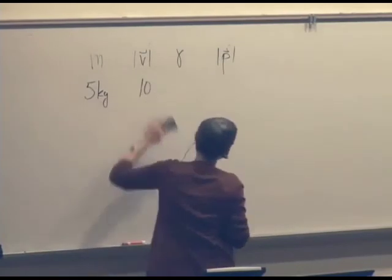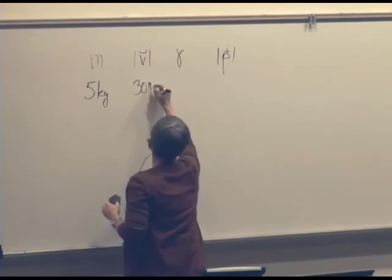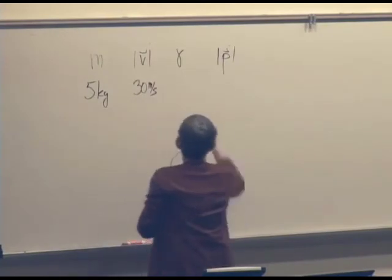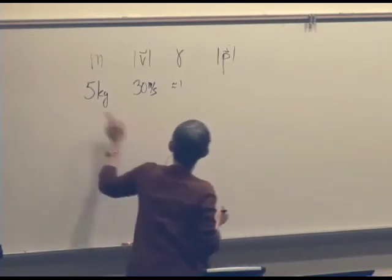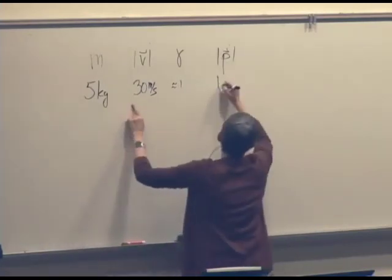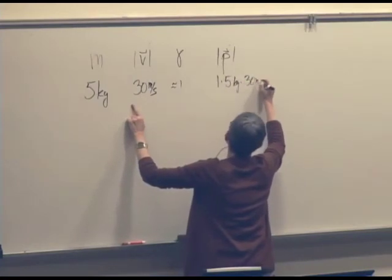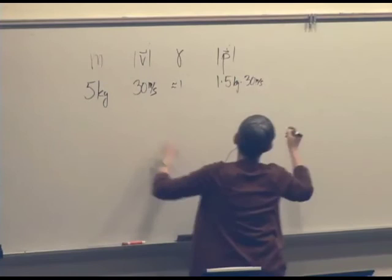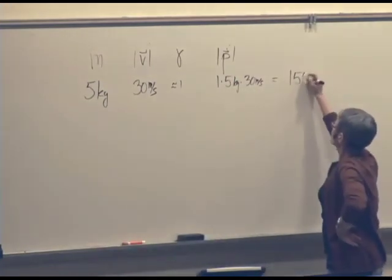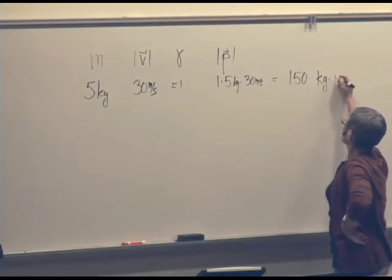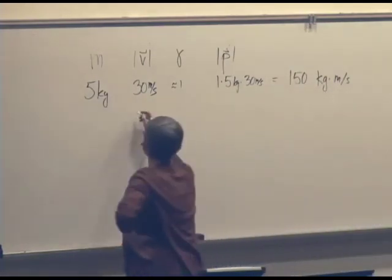Let's say it's going 30 meters per second. We decided gamma was approximately 1. And so the momentum of the object is 1 times 5 kilograms times 30 meters per second. The magnitude of the momentum, 5 times 3. So it looks like 150, the units seem to be kilogram meters per second.